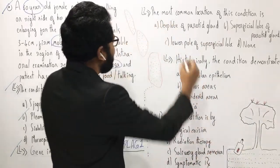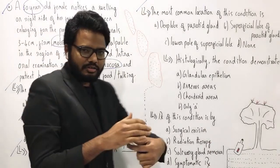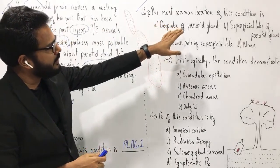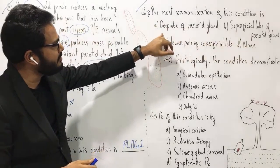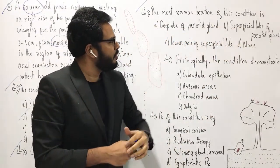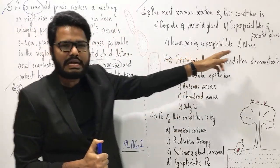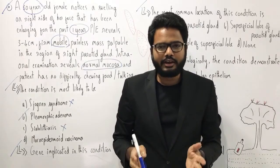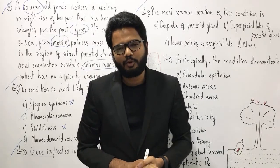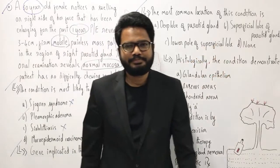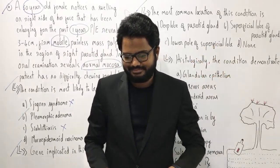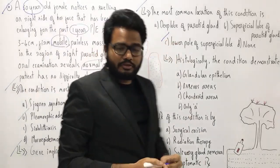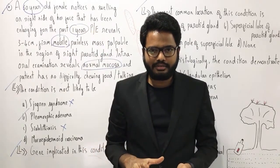Now let's move on to the next question: the most common location of this condition. As you know, the parotid area is the most common location, but within the parotid gland, which is the most common site? The options are: deep lobe of parotid gland, superficial lobe of parotid gland, lower pole of superficial lobe, or none of the above. Pleomorphic adenoma is found in both the superficial and deep lobes, but the most common location is the lower pole of the superficial lobe. Around 10% of cases occur in the deeper lobe.